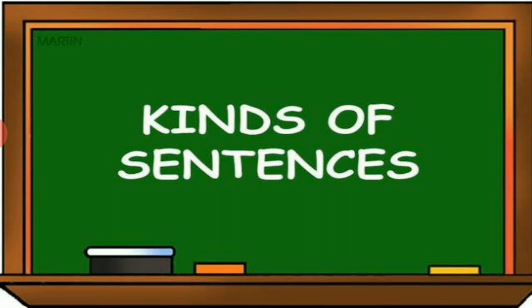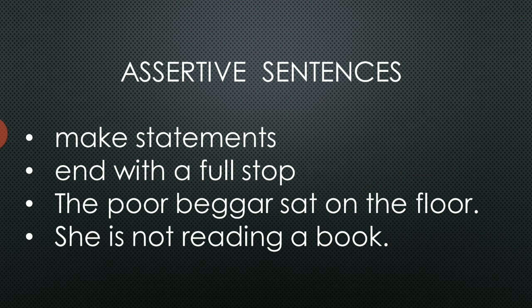Moving towards the kinds of sentences — as we know, there are four kinds of sentences. The very first one is assertive sentences. These sentences make statements and declare facts. They consist of two types: affirmative, the positive one, and negative sentences which convey negative meaning. Assertive sentences always end with a full stop.